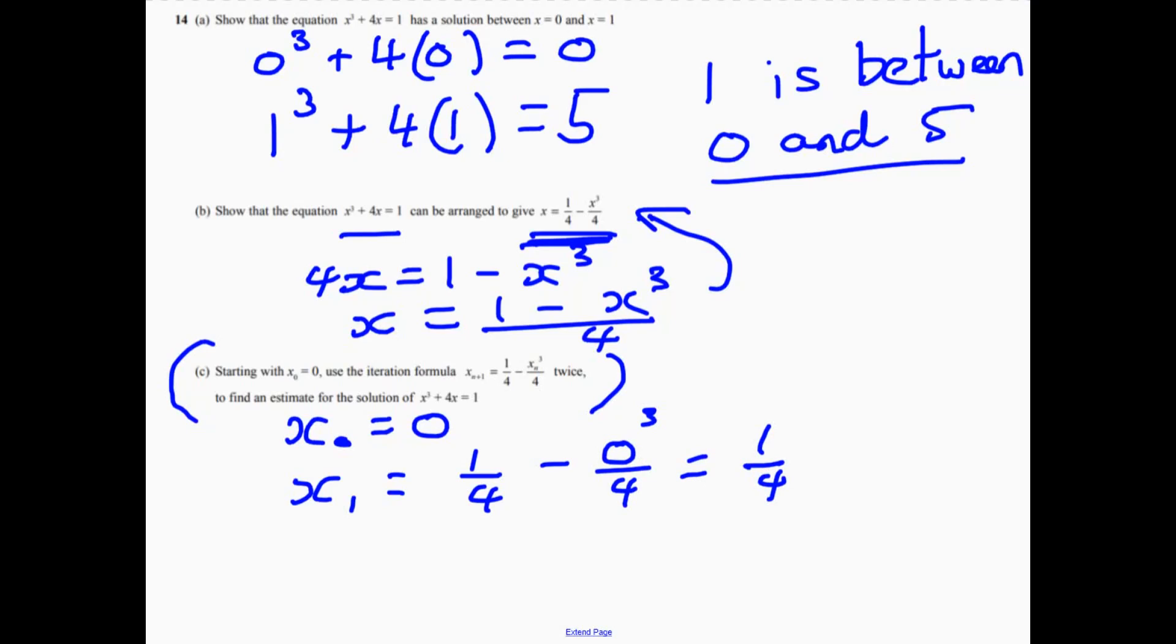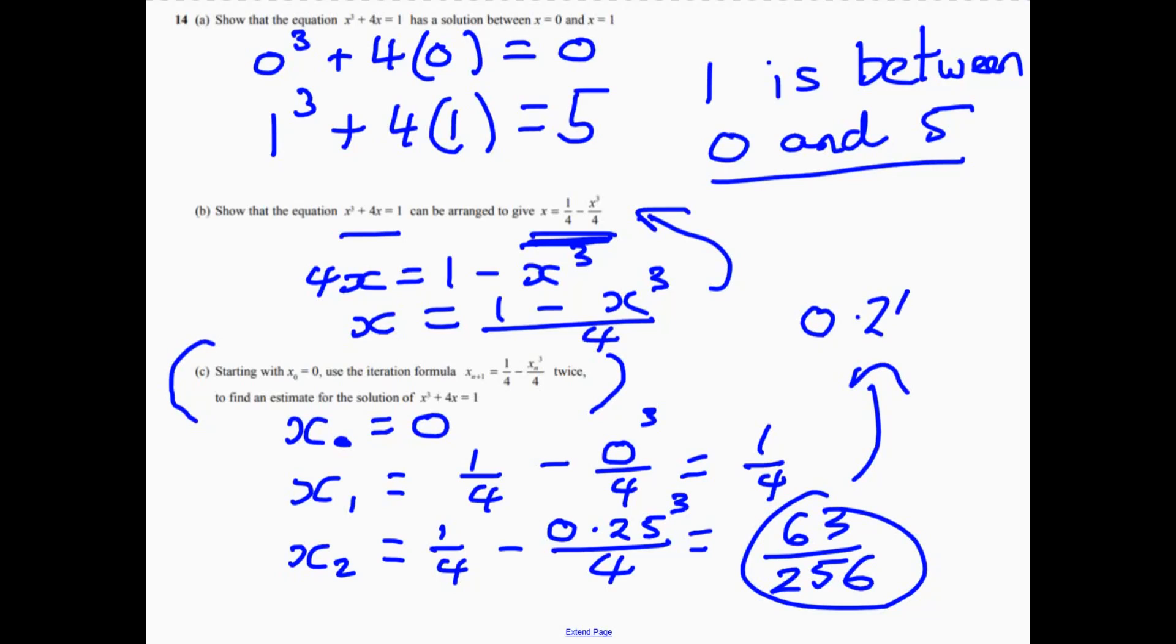Now the question wants us to do this twice. So now we need to do x₂. Now you probably need to get your calculator out for this bit. So what would it be? It's a quarter. Take away. Now a quarter cubed. I'm going to write that as 0.25. 0.25 cubed over 4. And if you work that part out, that will give us. If you just do that on your calculator, it will give you 63 over 256. Or if you prefer, we could write it as a decimal. And that would be 0.24609. And then there's a bit more to it after that.